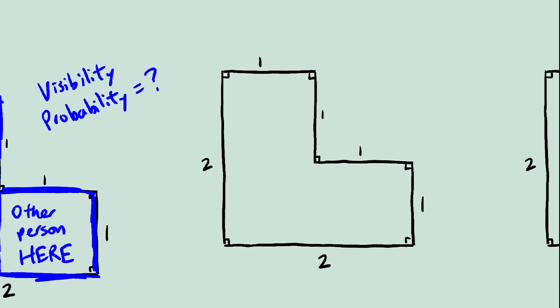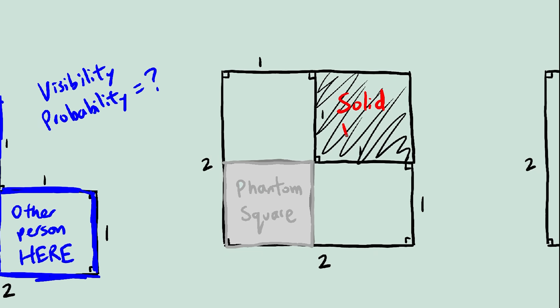And here we have the actually clever part of the solution. Let's create a phantom square, whatever you want to call it. Let's color it in with gray, and keep in mind you can see through this square. On the other hand, you cannot see through this square. This square is solid wall.